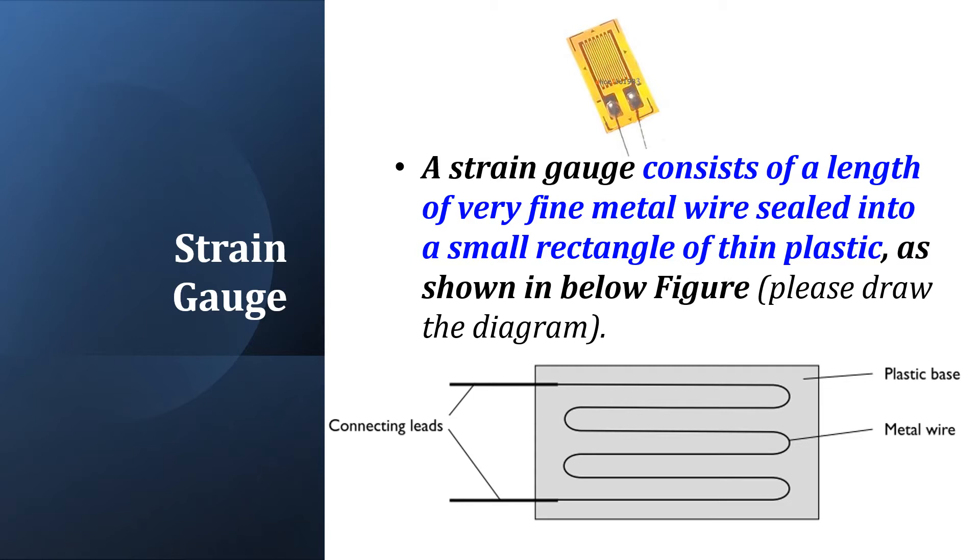Explain strain gauge using a sketch. A strain gauge consists of a length of very fine metal wire sealed into a small rectangle of thin plastic as shown in below figure.